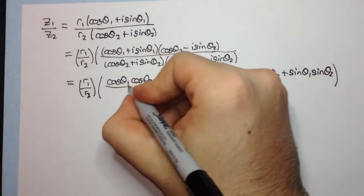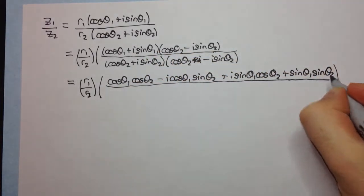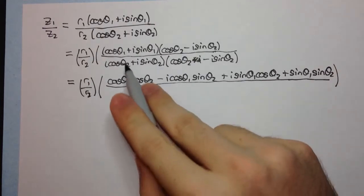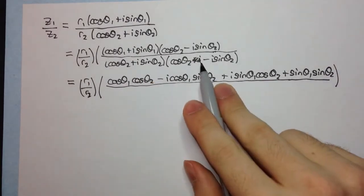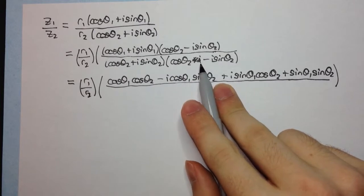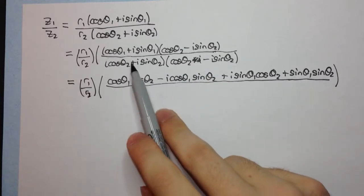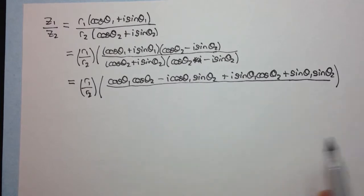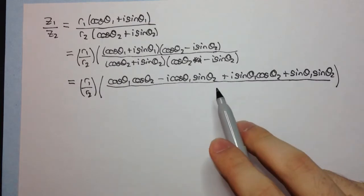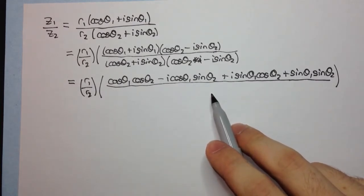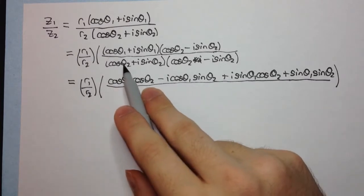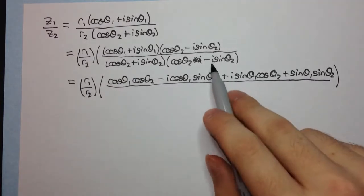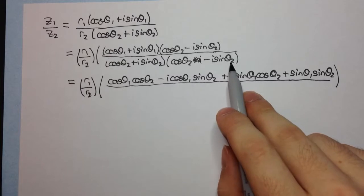All right, and all this divided by what? Well, here we have a complex number times by its conjugate. And if you remember back to a video or two ago, when we have a complex number times its conjugate, that becomes a sum of squares. So if it wasn't complex numbers, we'd have a sum of squares. So we're going to have cos theta2 all squared plus sin theta2 squared.